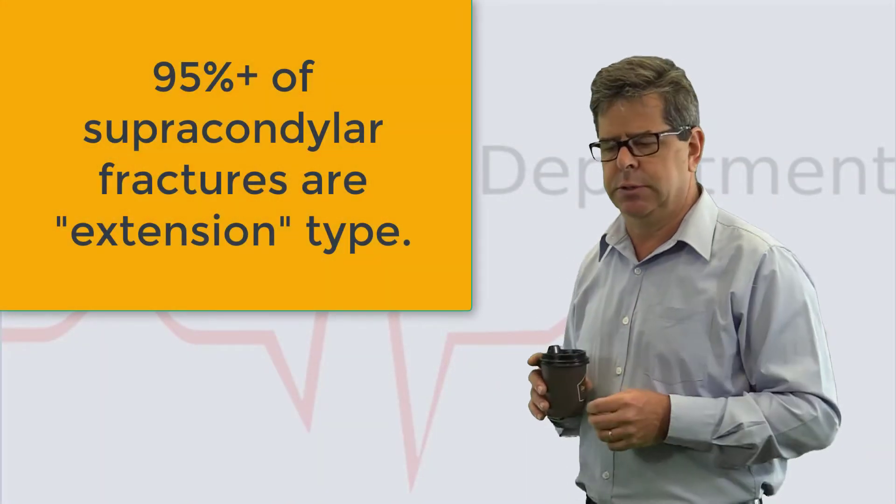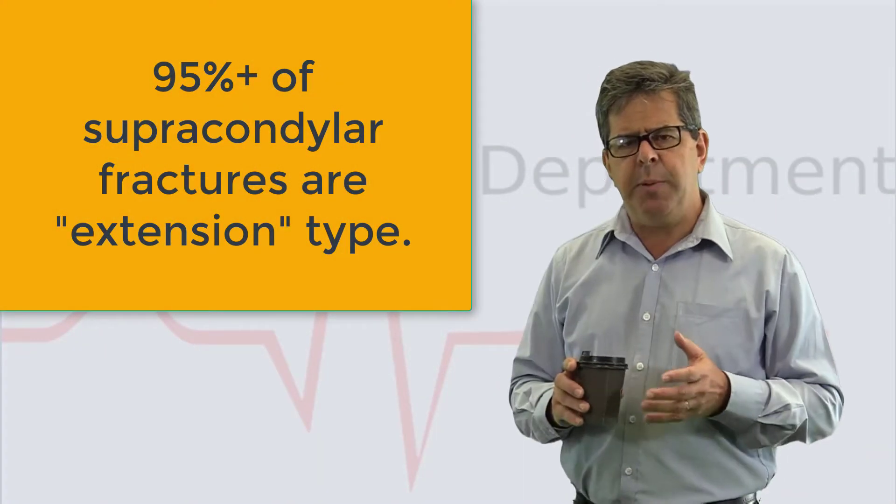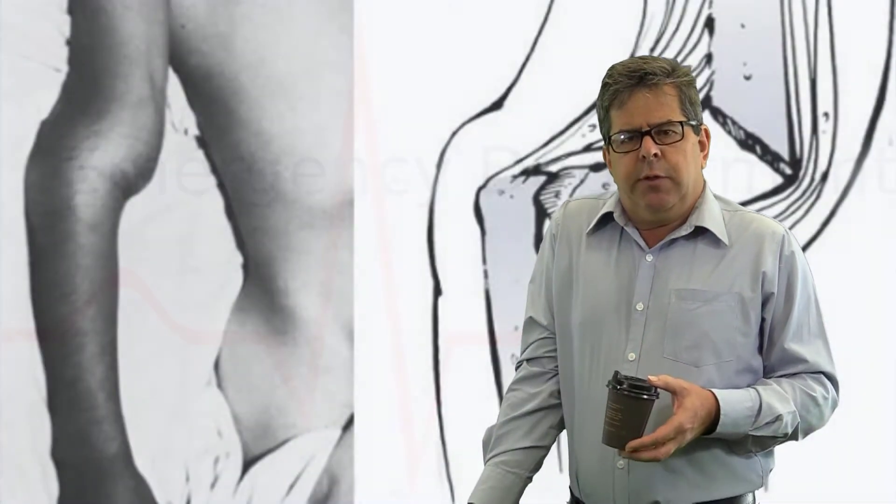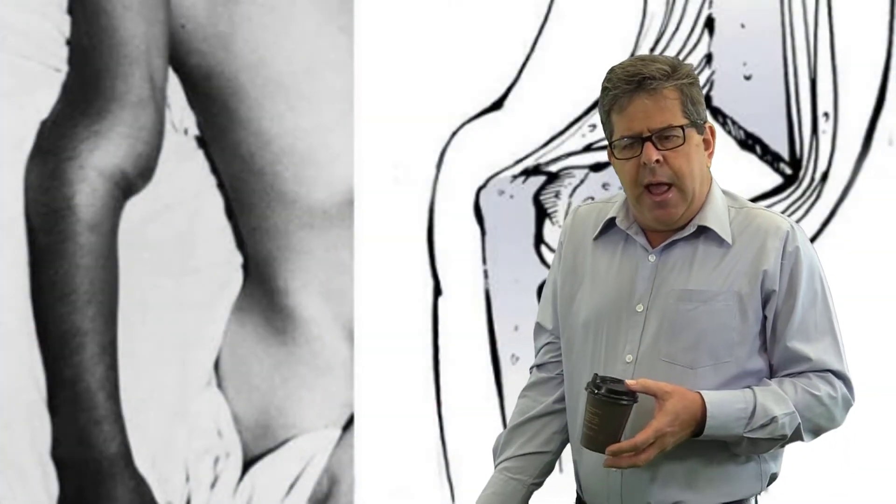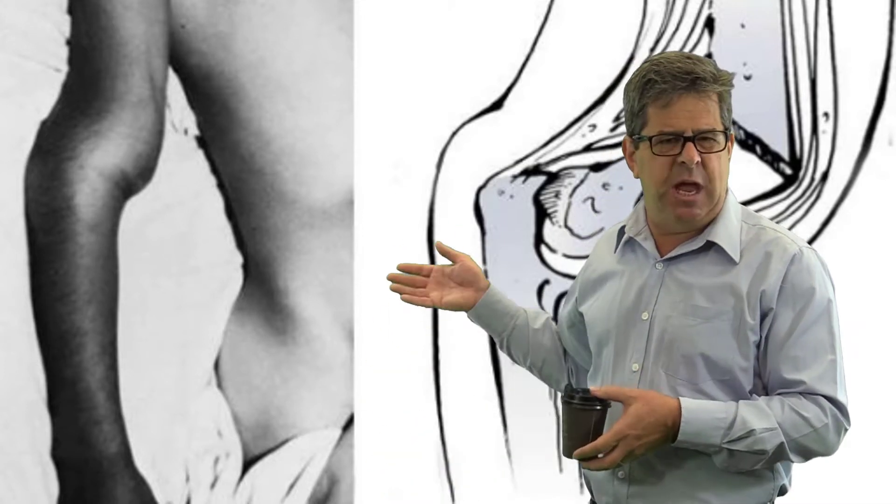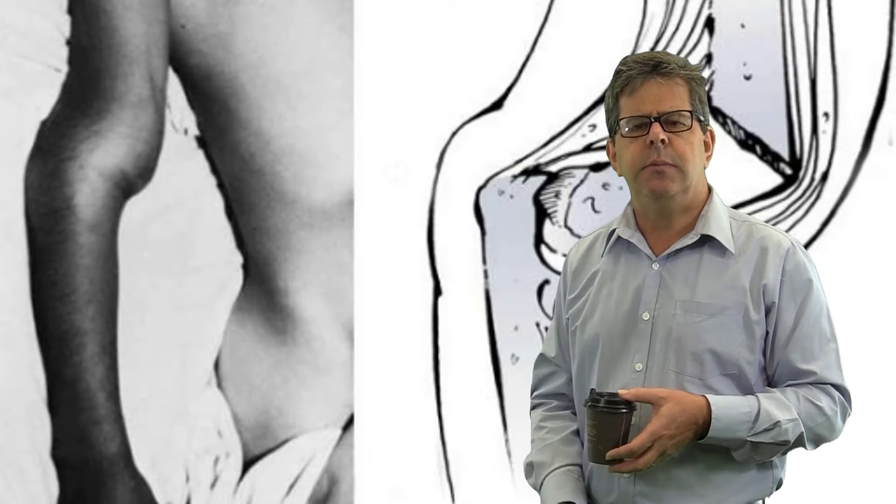How do kids with supracondylar fractures present? Often they've got the arm in extension, and if it's displaced they might get this characteristic S-shaped deformity that's described. You may see that it's displaced obviously.